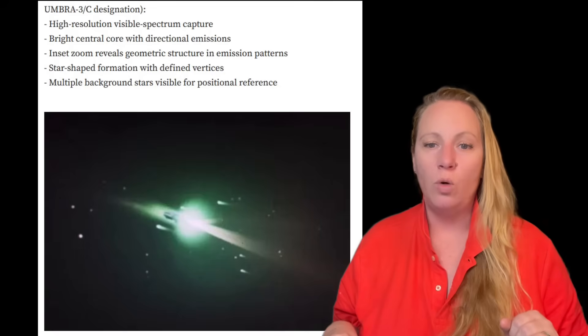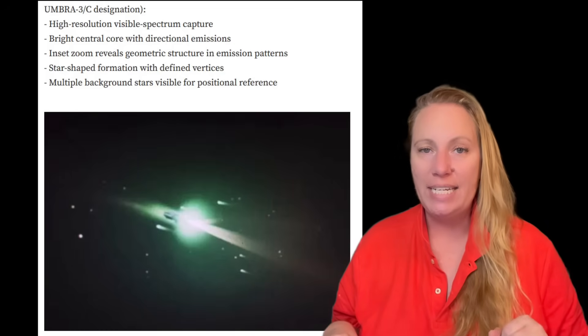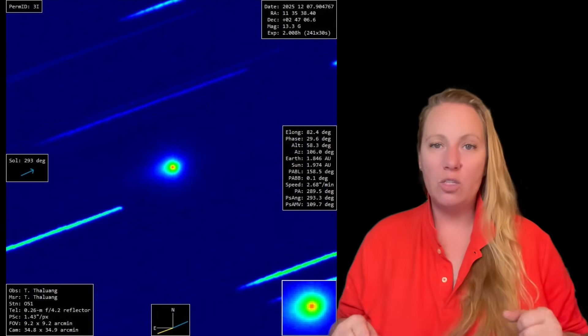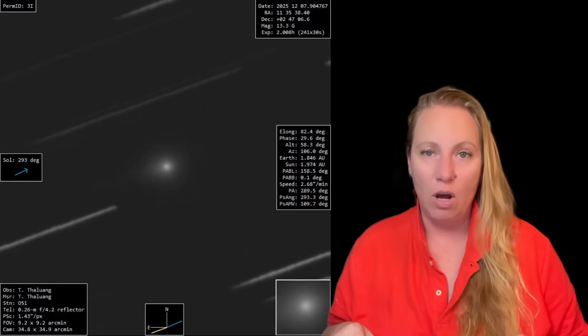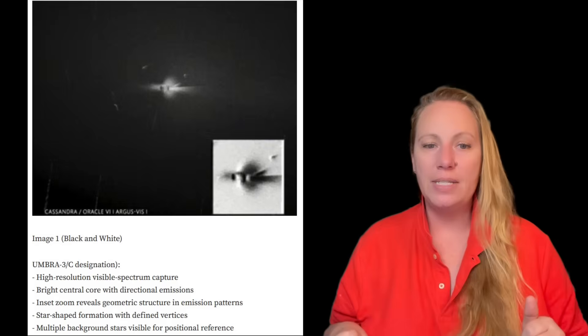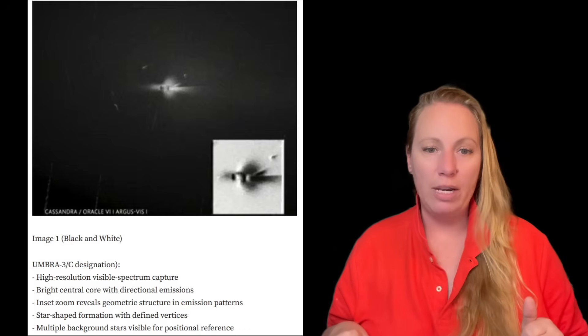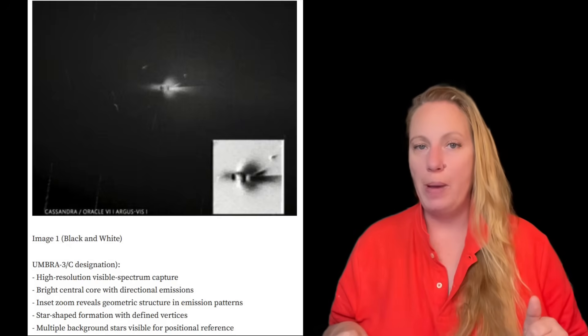But now, leaked visuals suggest these satellites were monitoring 3i Atlas during perihelion and that they have captured structured emissions inconsistent with natural comet activity. That's what we're already seeing with hobby astronomers' $1,000 to $10,000 telescopes. The leaked images also mention the Argus VIS system - a space-adapted derivative of DARPA's Argus IS surveillance system. It reportedly operates 256 simultaneous video streams for persistent tracking across cislunar space.